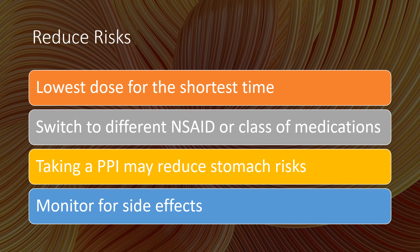To reduce the risk of ibuprofen side effects, use the lowest dose for the shortest period of time necessary. You can also switch to a different NSAID that may be better suited to your pre-existing health conditions. Topical anti-inflammatories, such as Voltaren gel or Voltaren Act gel, do not absorb into the body like oral tablets and may be an option. You may also need to switch to a different class of medications altogether. Taking a proton pump inhibitor (PPI) like omeprazole or pantoprazole reduces stomach acid and can lower the risk of ulcers when using ibuprofen. Always monitor for side effects with your healthcare provider and watch your blood pressure regularly.